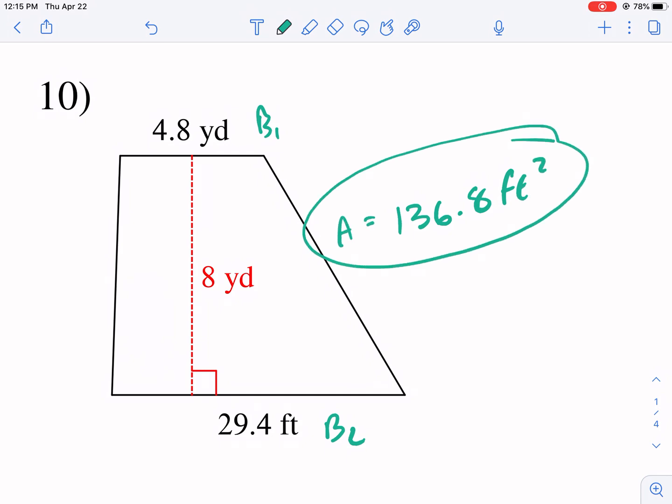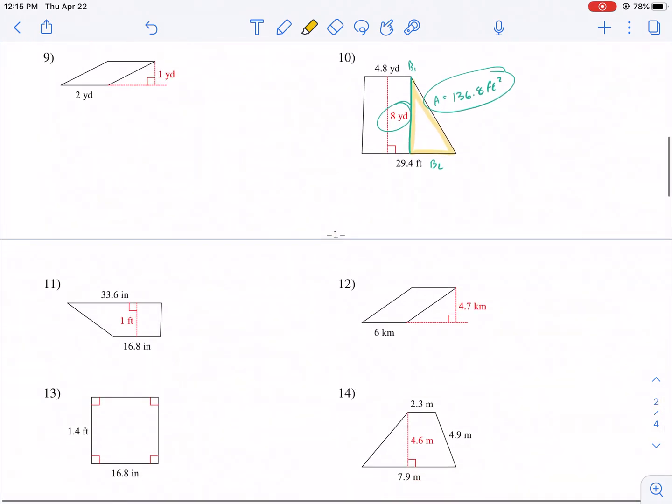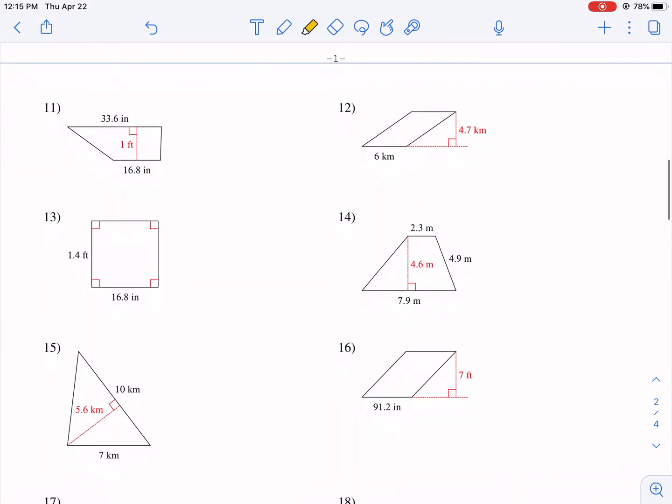Just add the bases together. Multiply by the height. And then divide by 2. And the reason why you divide by 2 or multiply by 1 half is because there is, you can see it, a triangle kind of built into it. So that's where that 1 half comes into play. So if I will go ahead and do a couple more of these.